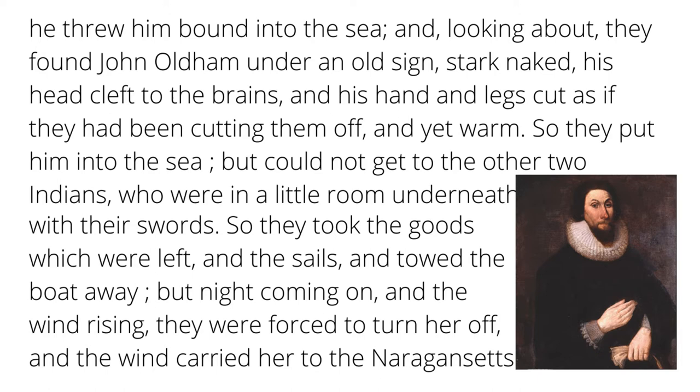So they put him into the sea, but could not get to the other two Indians, who were in a little room underneath with their swords. So they took the goods which were left, and the sails, and towed the boat away. But night coming on, and the wind rising, they were forced to turn her off, and the wind carried her to the Narragansetts. So that long account there basically talks about Mr. Gallop coming upon John Oldham's ship, it being full of natives. They were able, through a number of maneuvers, to eventually scare a majority of them into jumping into the ocean, leaving four behind on the boat. Two surrendered, were tied separately, but could not be put together because they would free each other. So they threw one into the ocean, and then ignored the two who had locked themselves apparently in the hold, took everything off the ship they could, tried to tow it away, and then the wind broke it loose for the Narragansett.